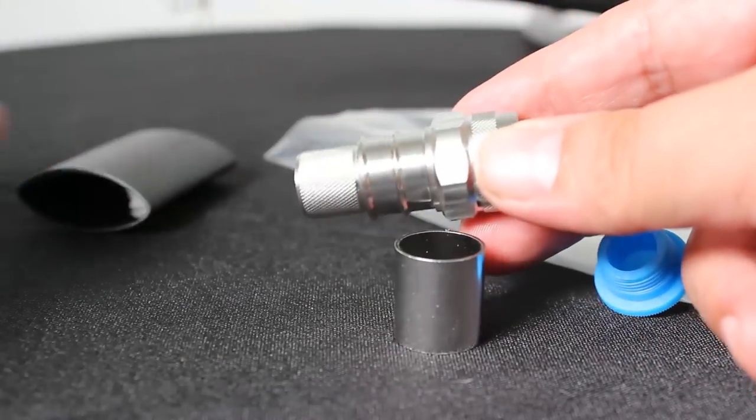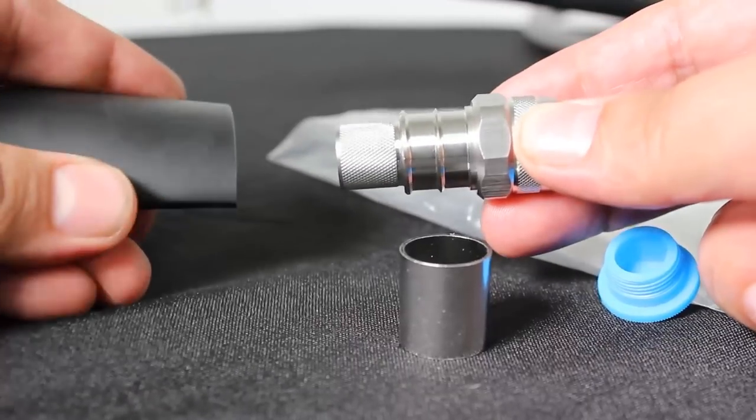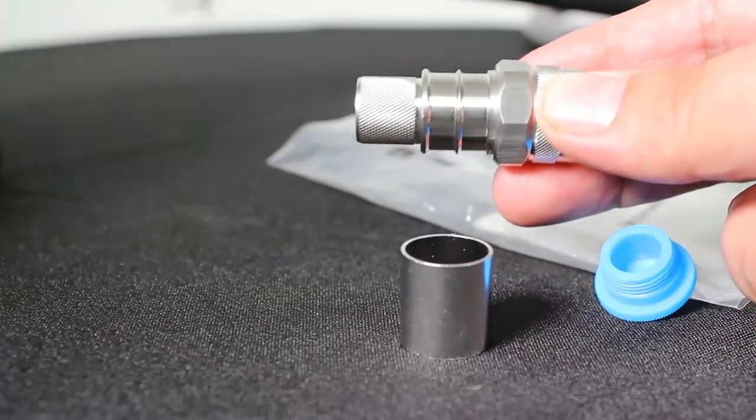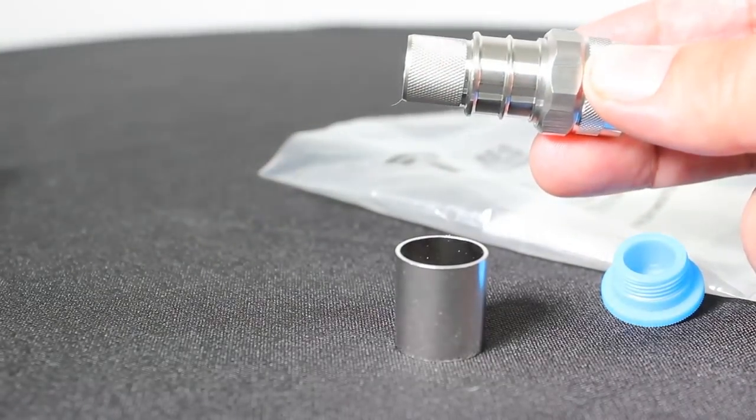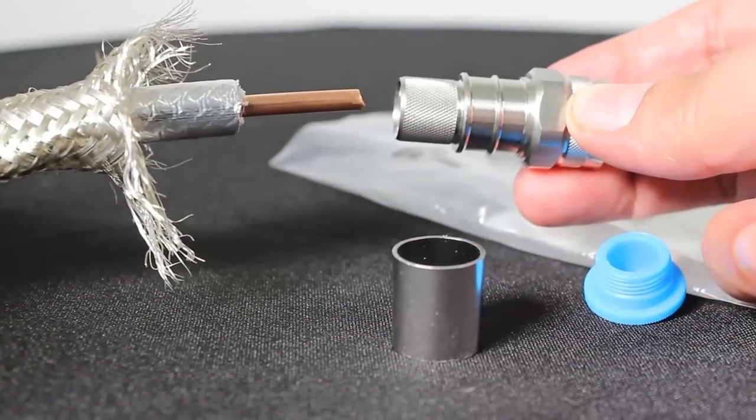It also includes a little piece of heat shrink here for you, and this is for the LMR cable. If you've never worked with this stuff before, the diameter of the cable, 50 ohm, it is quite a big cable.